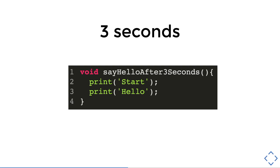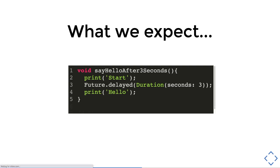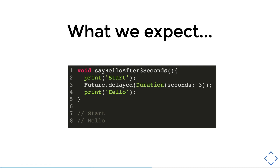So how do we create a delay? We are going to use this concept or object called the Future. A Future is basically an operation that executes successfully or not successfully. For a Future, there is a delayed method that allows us to have a delay of three seconds using a Duration object. So we expect that when the function is run, the start statement prints out, and then after three seconds, hello is printed.